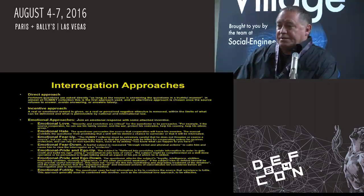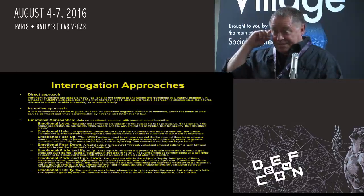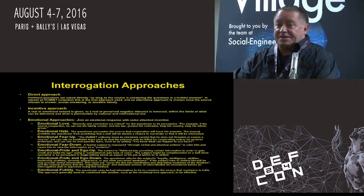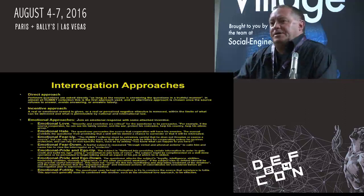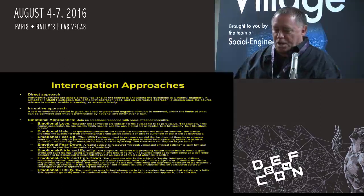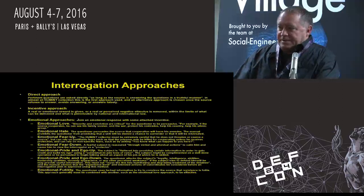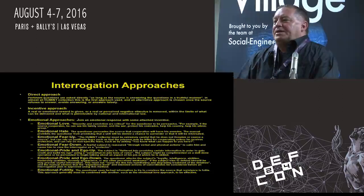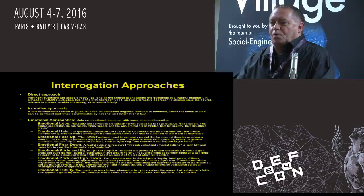Emotional fear up — same thing. You want to increase the fear through various threats and intimidation techniques. But again, all emotional — there's no physical abuse whatsoever. Fear doesn't necessarily bring out accurate information from a person. Emotional fear down is when we see how scared they are and do everything to calm them down — assure them we're not going to hurt them, we're going to feed them, clothe them, get them back to their family as soon as we can work out the process.